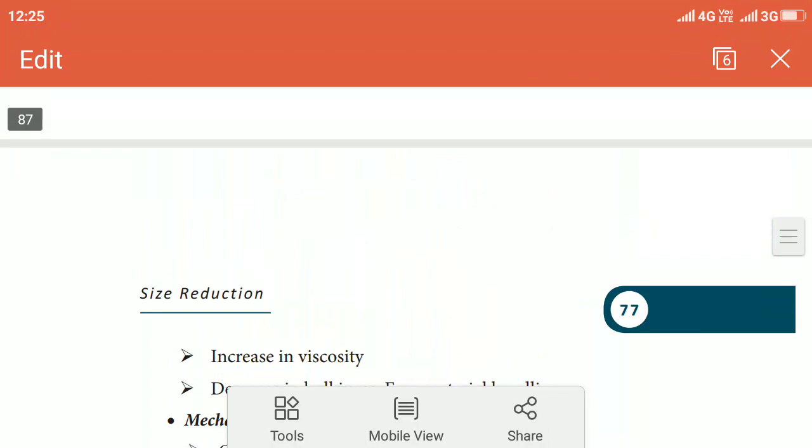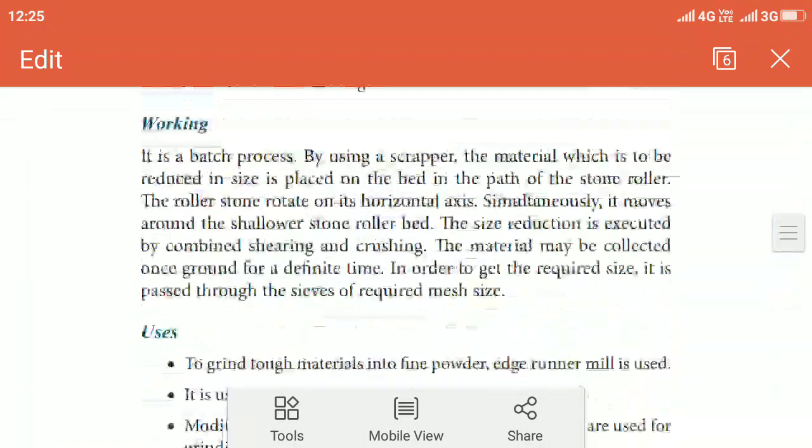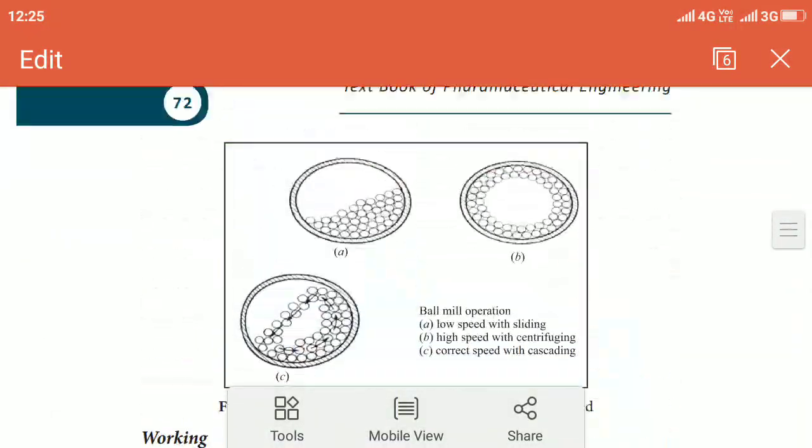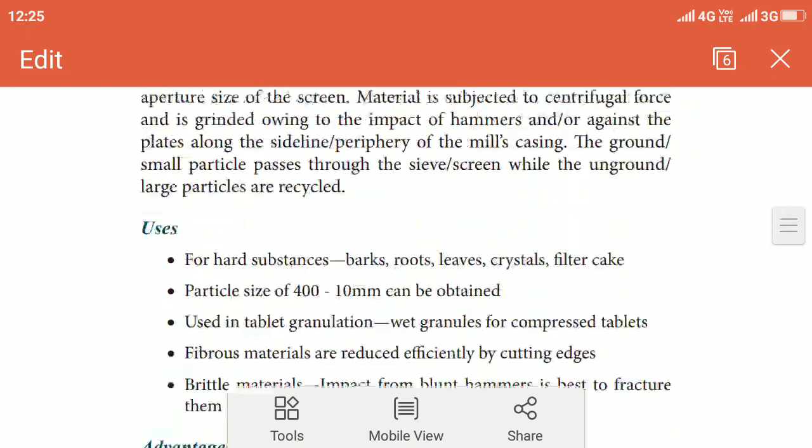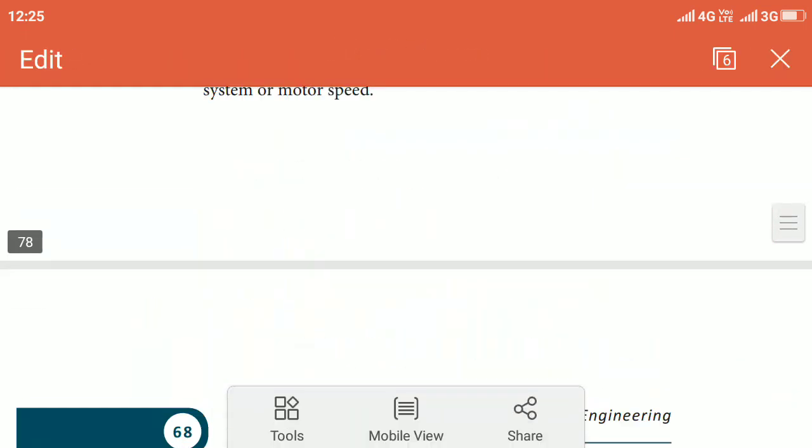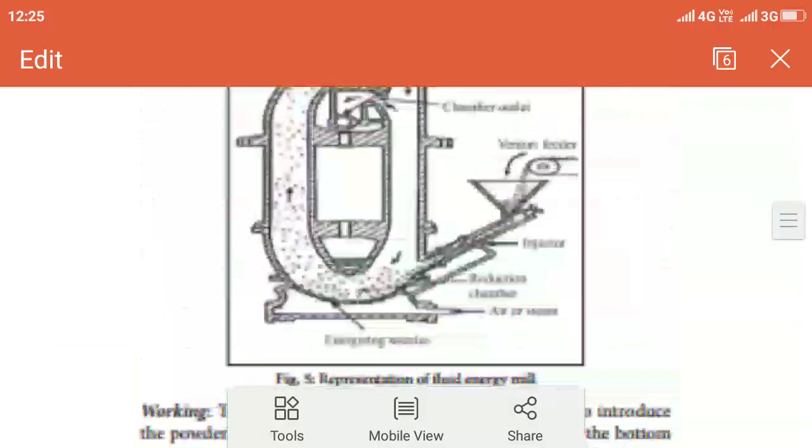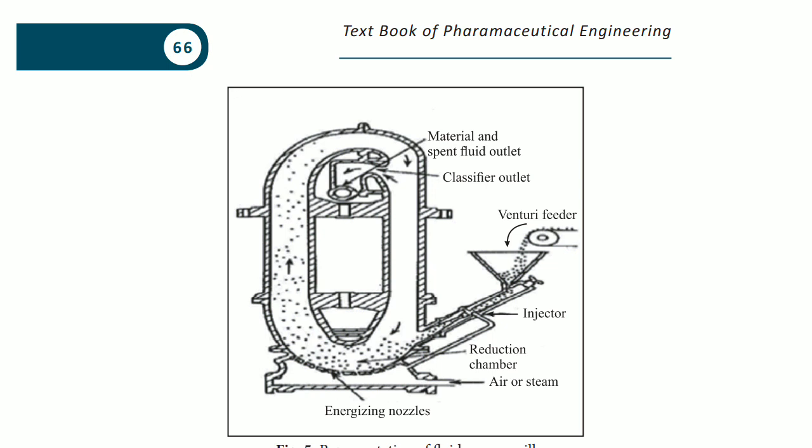The next one was fluid energy mill. The diagram will show you the components of fluid energy mill. This is the hammer mill and this is the fluid energy mill. So you can see the grinding nozzle or energizing nozzle, the airstream, injector, venturi feeder, all these are parts of fluid energy mill.